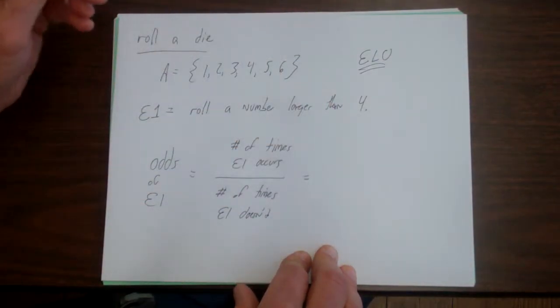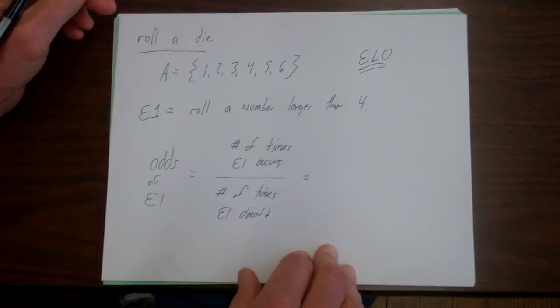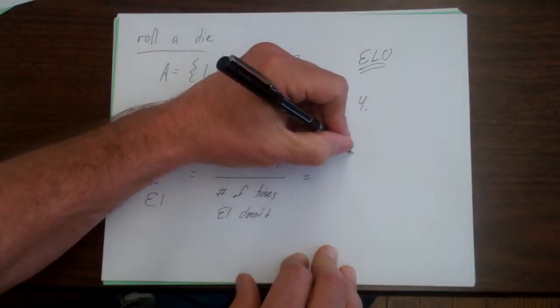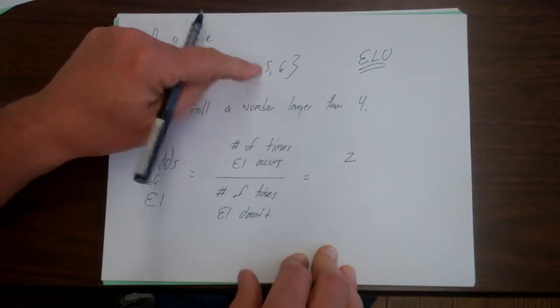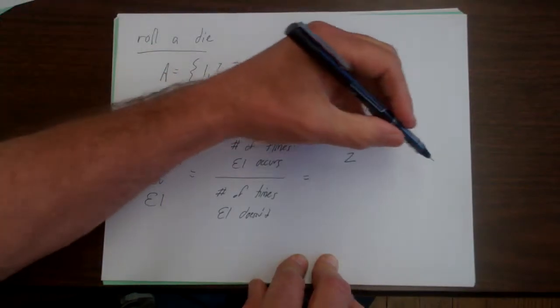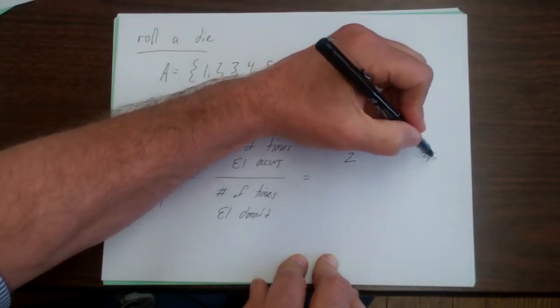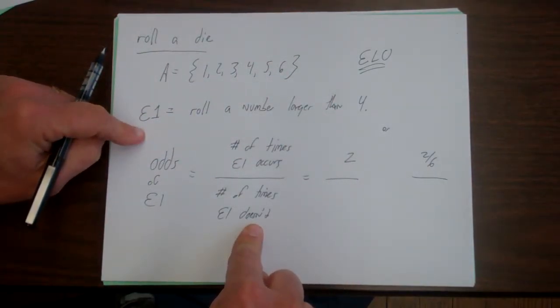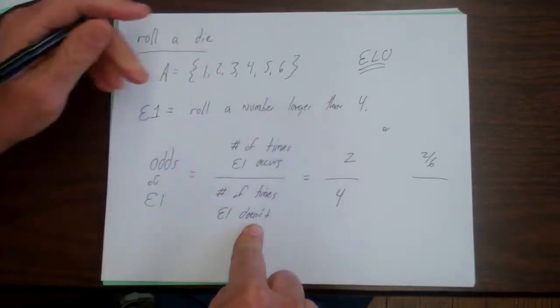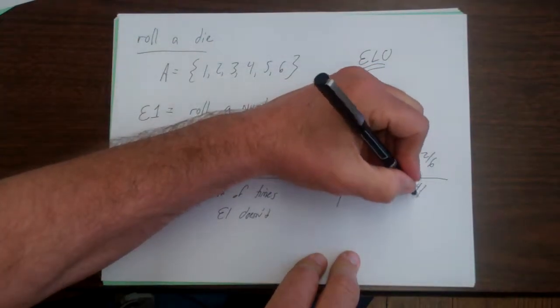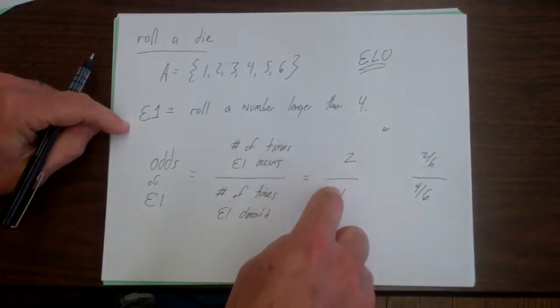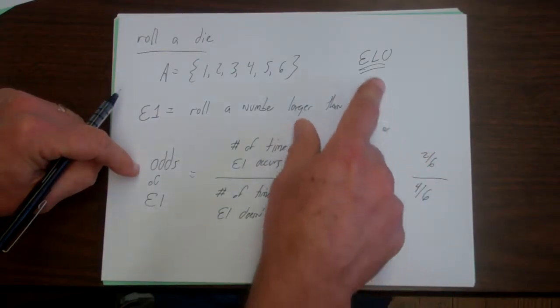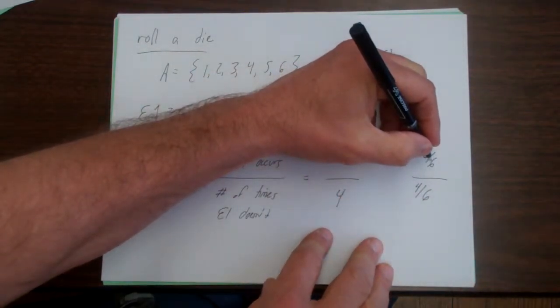So here, the odds of E1 would be the number of times E1 happens over the number of times E1 doesn't. And that would equal to, let's see, the number of times E1 occurs. The number bigger than 4, that's 5 and 6. So that's 2. So you could either say 2 out of 6 or 2. It wouldn't matter. Let's do them both ways. And the number of times E1 doesn't occur, well, that would be 4, or 4 out of 6. The reason it doesn't matter if you do it in terms of the total number of outcomes or the probability is because this is an ELO problem. The 6's are going to cancel here anyway.